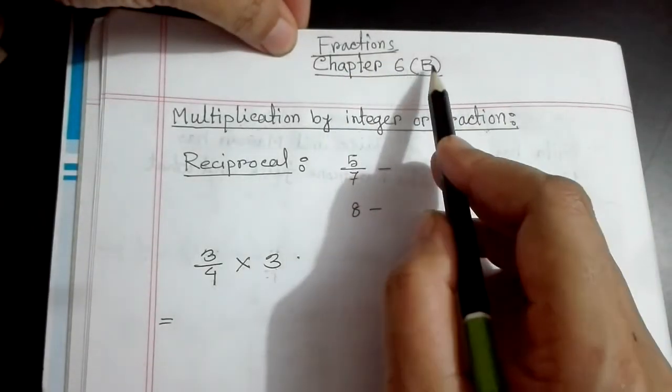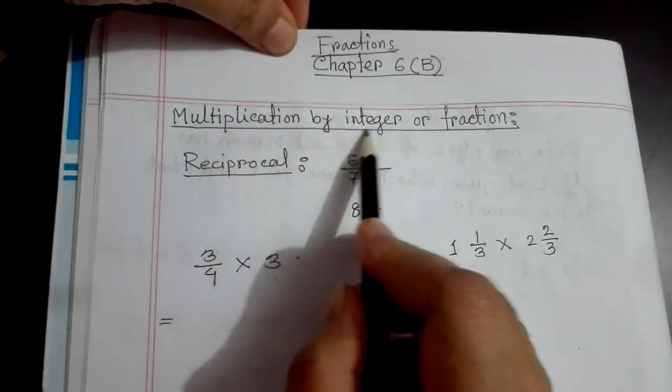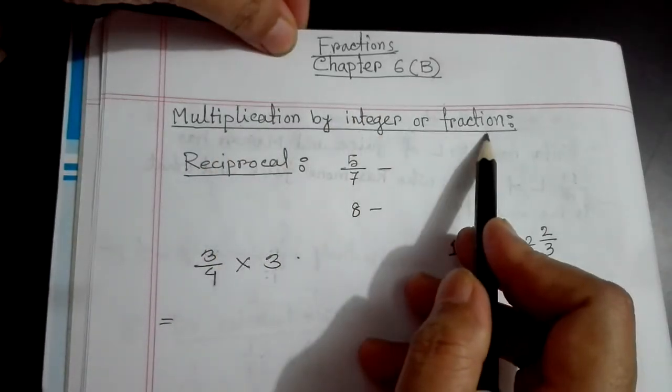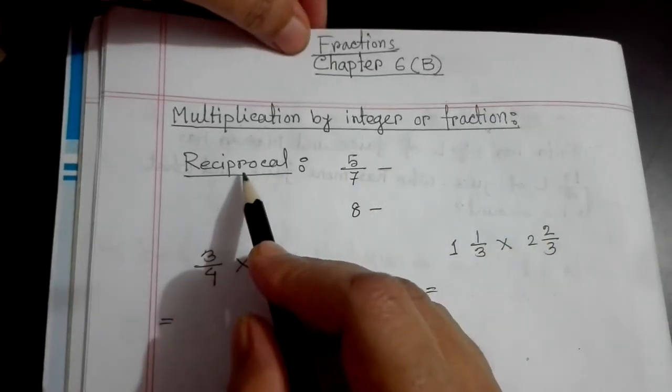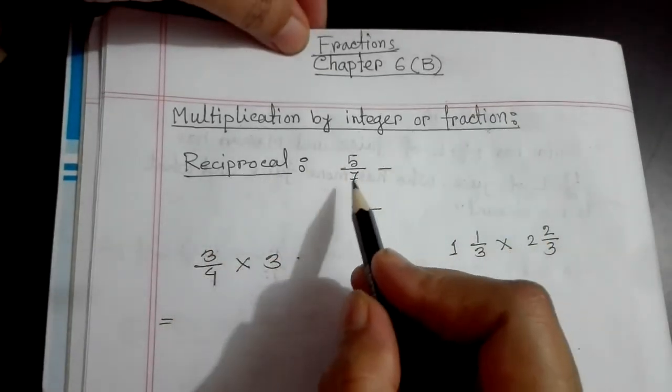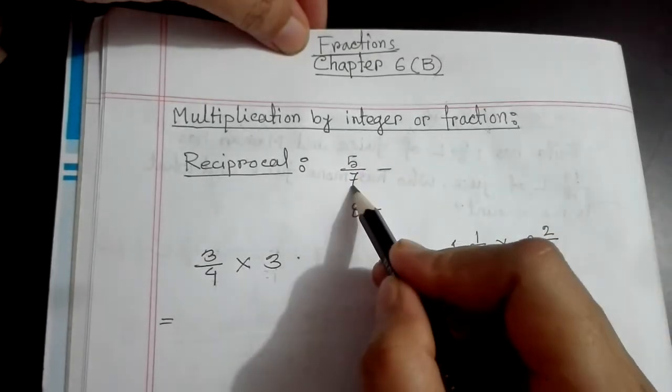Fractions, Chapter 6B. Today we will learn how to multiply by integer or fraction. At first, we have to know what is reciprocal. Reciprocal means inverse of a number or a fraction.